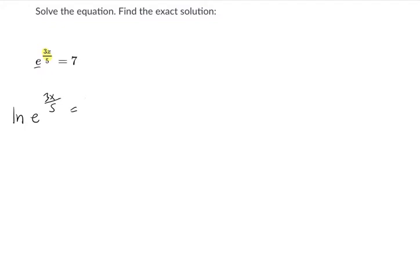So the natural log of the left equals the natural log of the right, and what does this equal? This equals 3x over 5, because the ln, if you remember, of e equals the log base e of e.